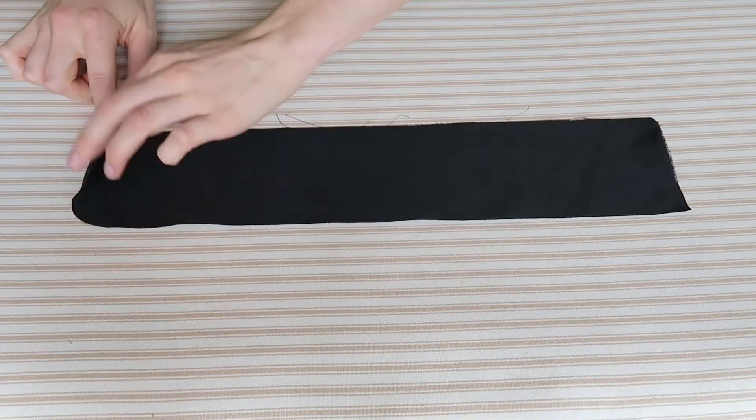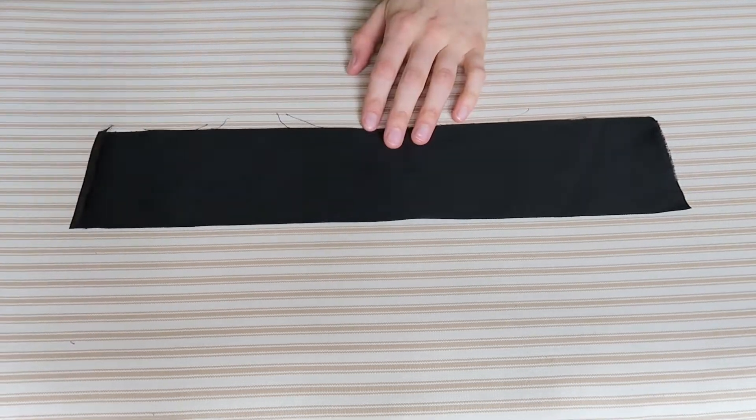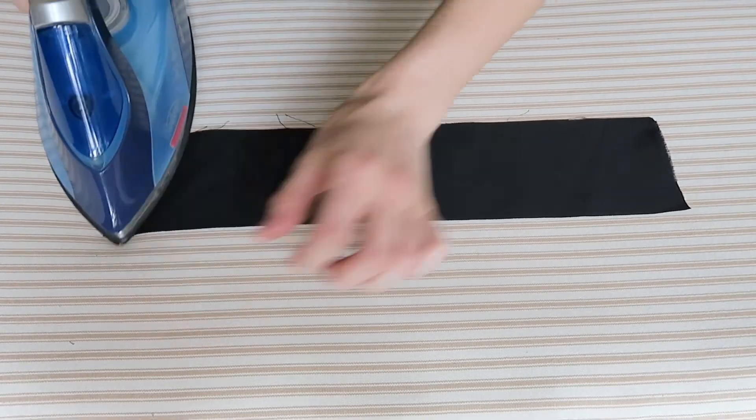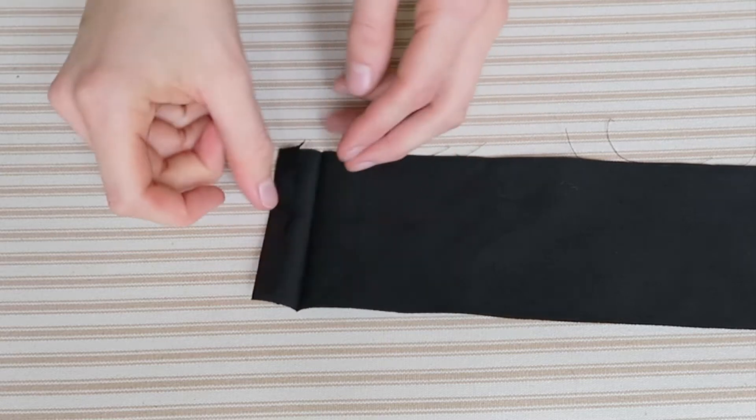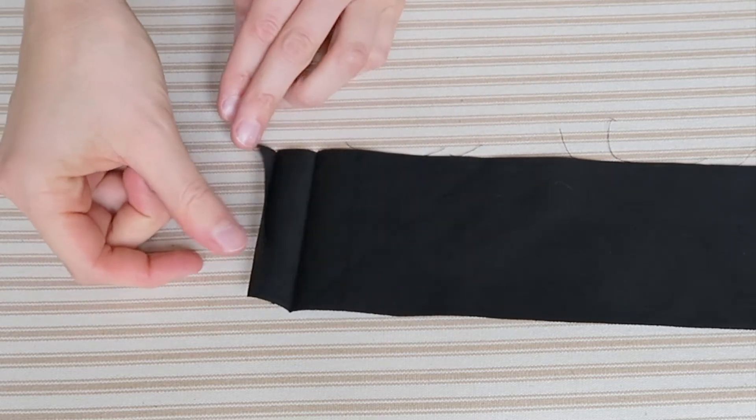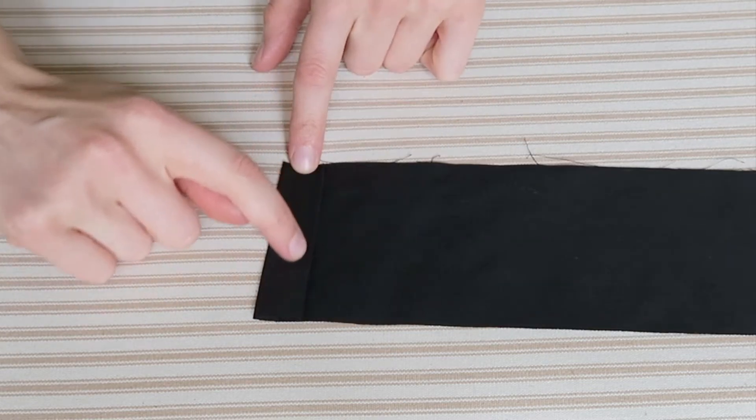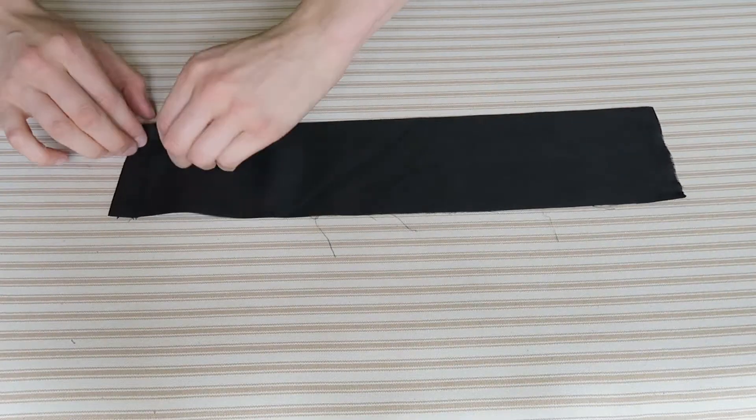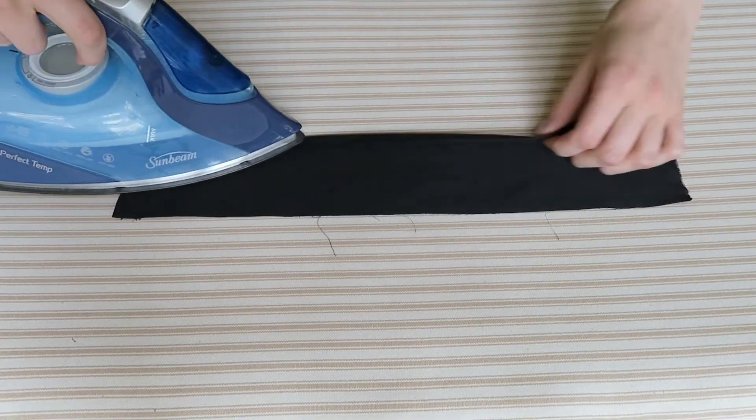Fold down another two centimeters, iron and stitch along that fold line. Fold one and a half centimeters down each long edge and iron in the crease.